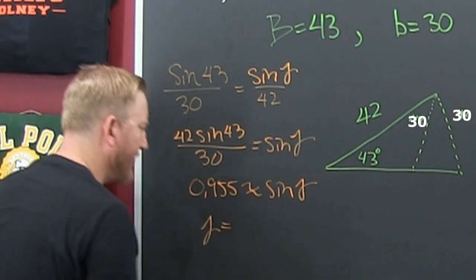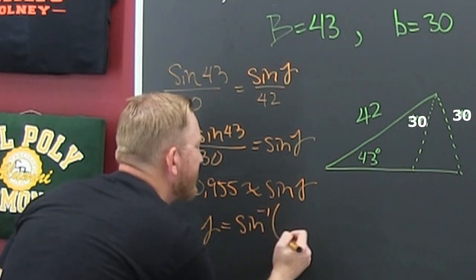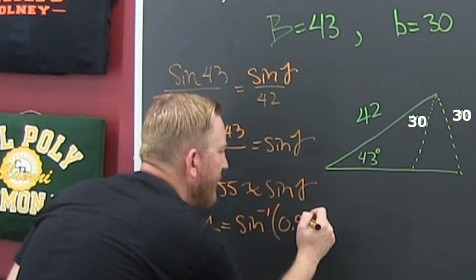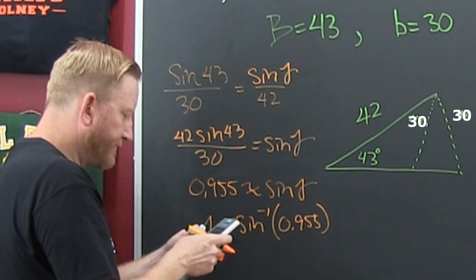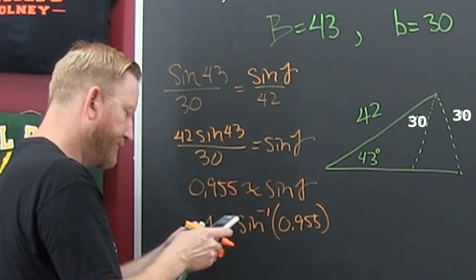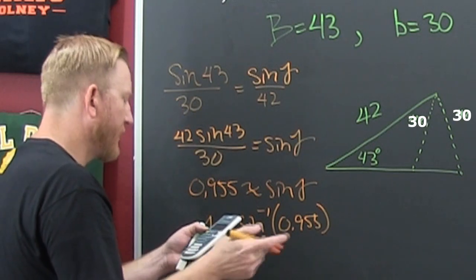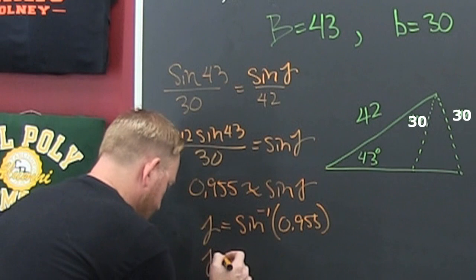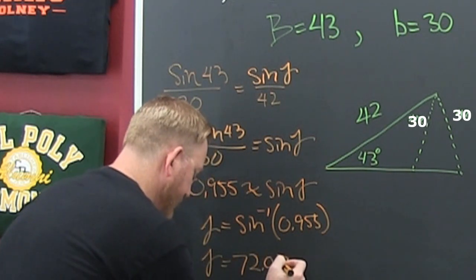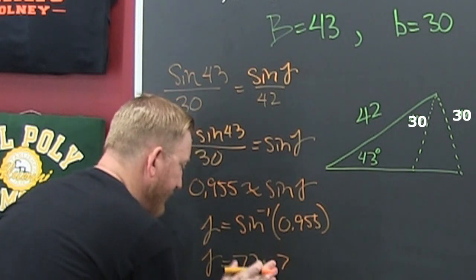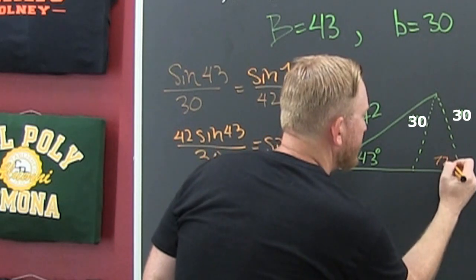That's the sine of gamma. So here are gamma. We inverse sine that. Boom. So it looks like that's 72.07. And what's that? Which one? Is that that one? No, it's this one. That's that 72.7. How do we get the other one?